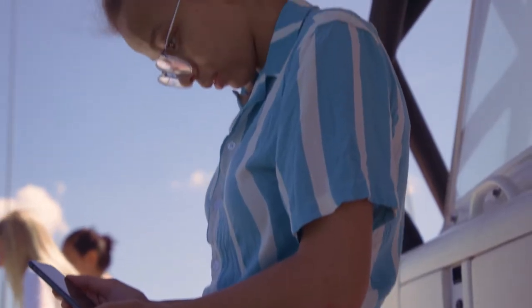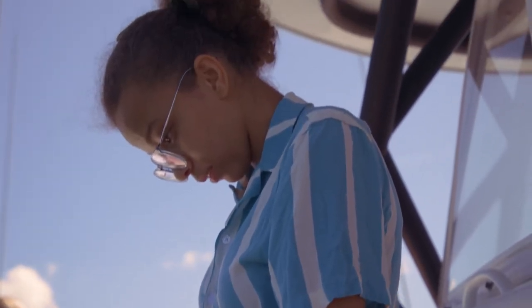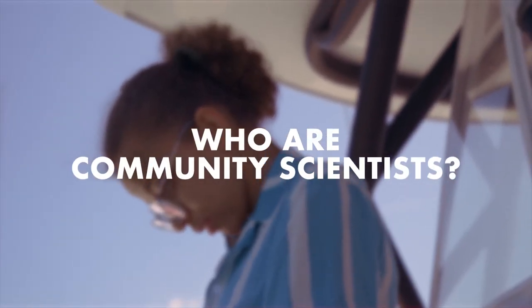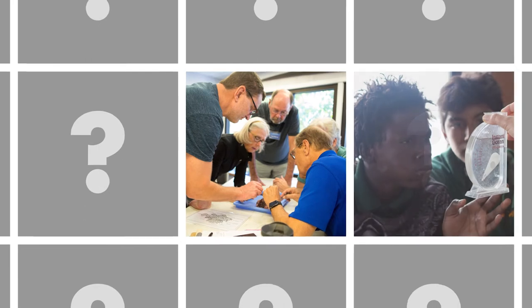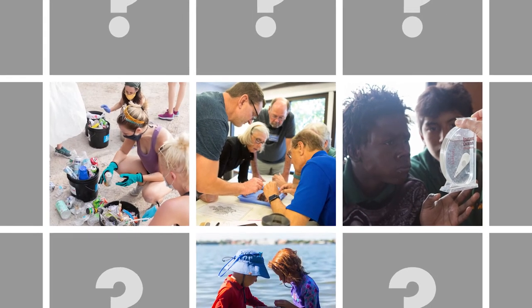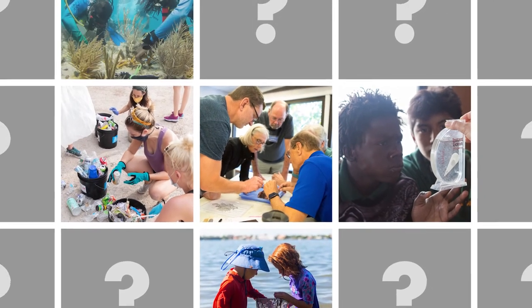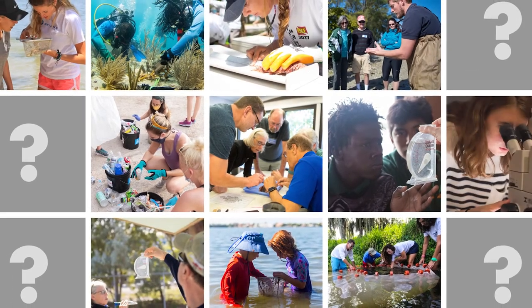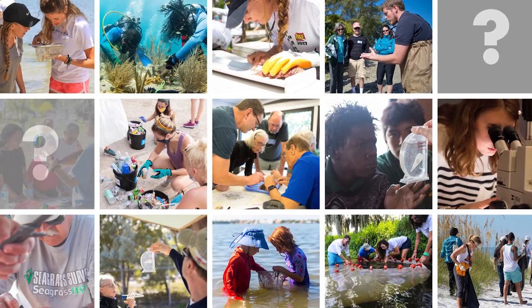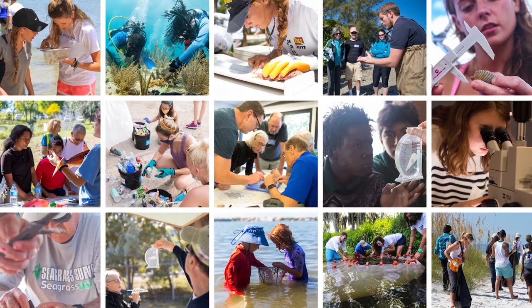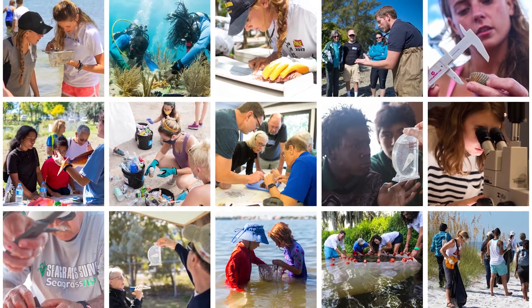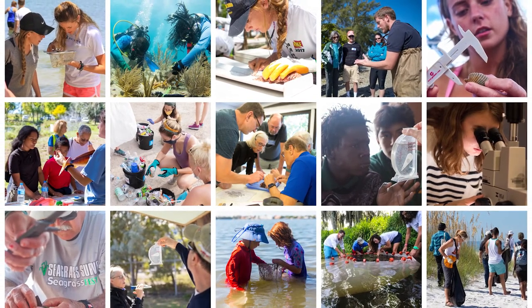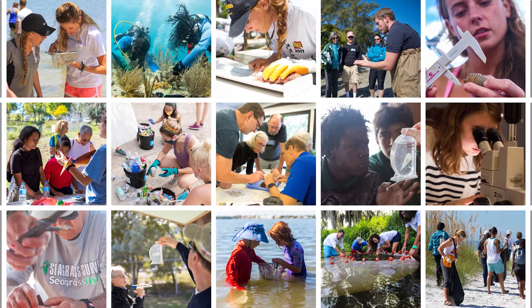Which is why community scientists like you are so important. Who are community scientists? Community scientists are people from all walks of life who are curious about scientific research and or are concerned about environmental health. They can be retirees, educators, students, environmental stewards, tourists, and people of all professions that come together with professional scientists to help further scientific research.